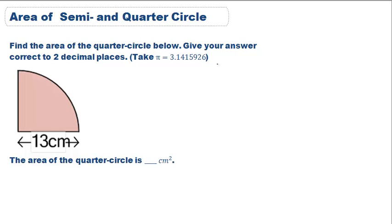So the first thing we're going to do is find the area of the entire circle. We know that area is equal to pi r squared. Here we know that r is 13 centimeters and that it wants us to use 3.1415926 as pi.